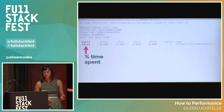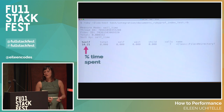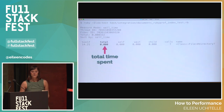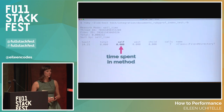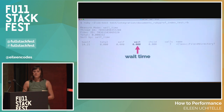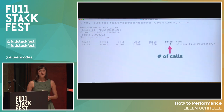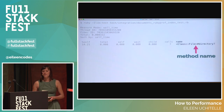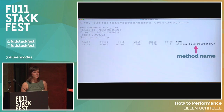RubyProf has given us a lot of information — when I first saw this, I was pretty confused. Let's break down what we're looking at. First, we have the percentage of time spent in this method, calculated from time spent in the method divided by total time. Then we have the total time spent in this method and its children. Next, we have time spent in this particular method. Then we have the wait time spent in this method, the time spent in this method's children, the number of times this method was called, and finally the method name.